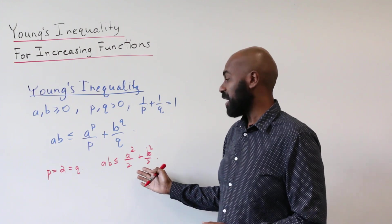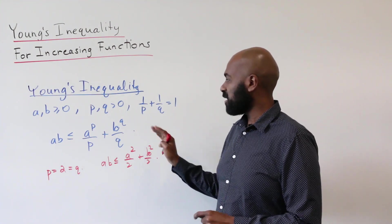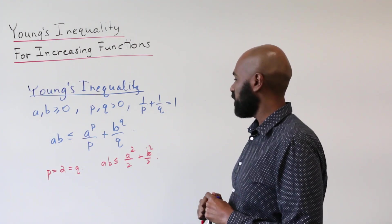And this can be established actually using the arithmetic geometric mean inequality. So you can think of this as a little bit of a generalization of the two variable arithmetic geometric mean inequality in a sense.